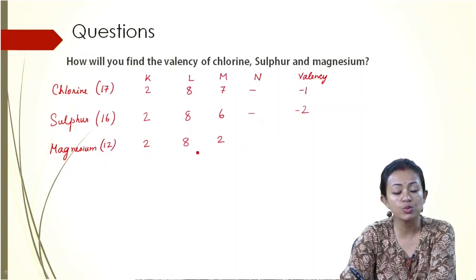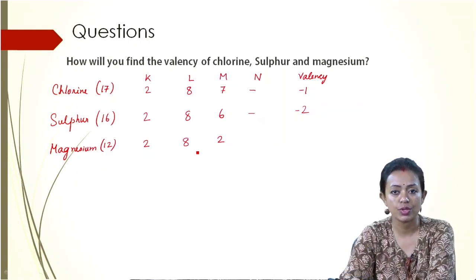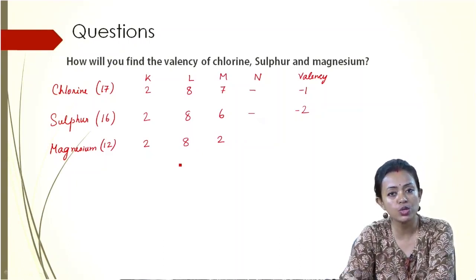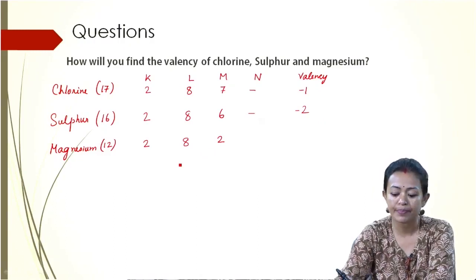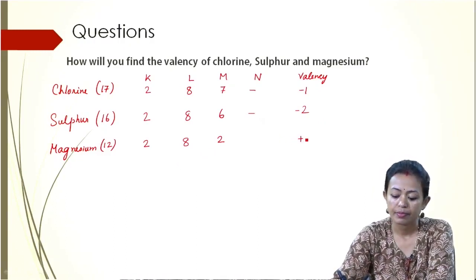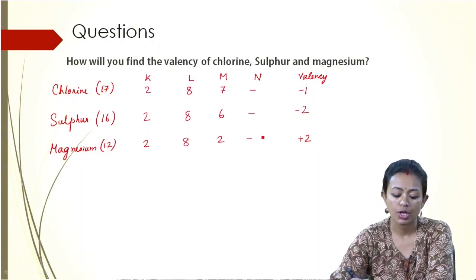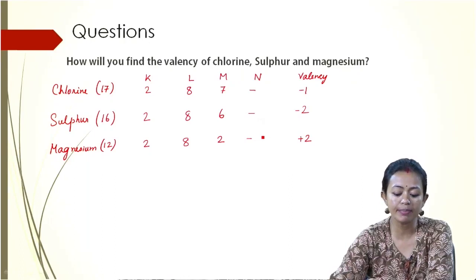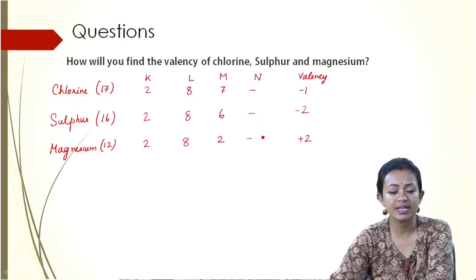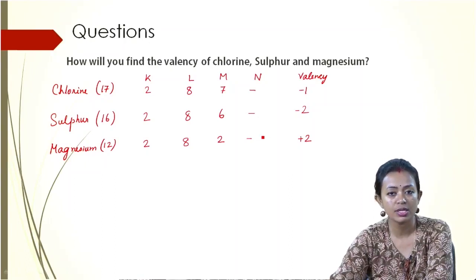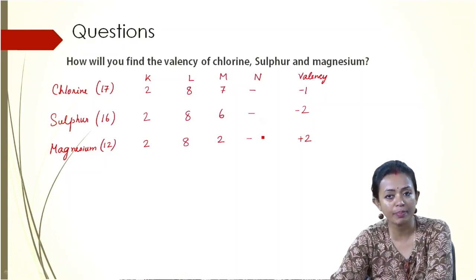So for Magnesium, it would lose electrons. Magnesium will readily lose 2 electrons to have a valency of plus 2, to make it octet. So it will lose these 2 electrons and become 2 and 8. And because there is now excess of positive charges, thus the valency of Magnesium is going to be plus 2.